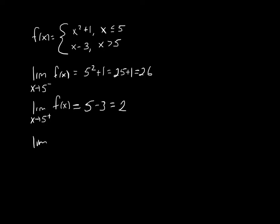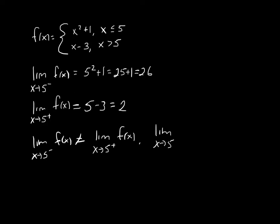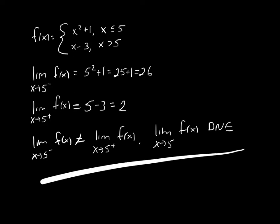Since the limit as x approaches 5 from the left is not equal to the limit as x approaches 5 from the right, the limit as x approaches 5 does not exist.